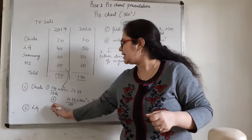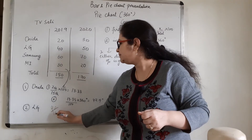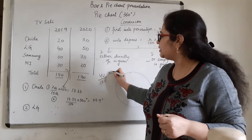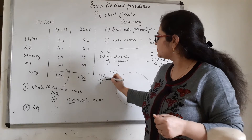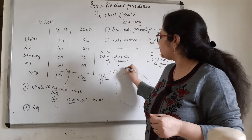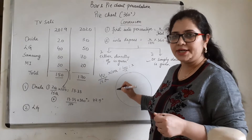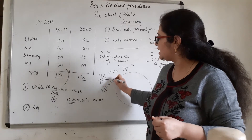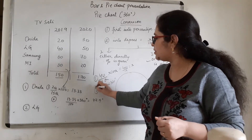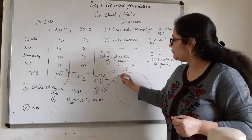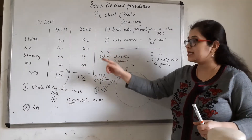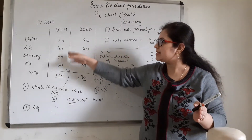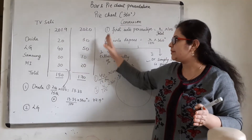Similarly, if we have to calculate for LG, we remove the percentage first. 40 by 150 into 100 — this is going to be 400 by 15. Whatever this comes out to be, call it X. Then X by 100 into 360 degrees — call the result Y. So you will add two columns to the table: percentage and degree. This will also have percentage and degree columns for all brands.